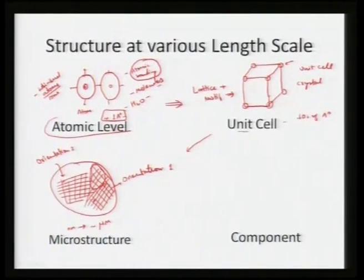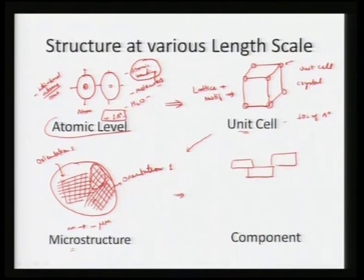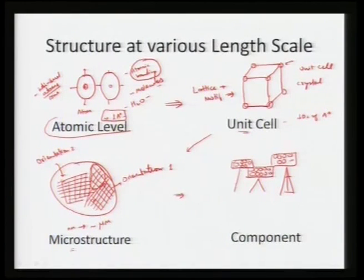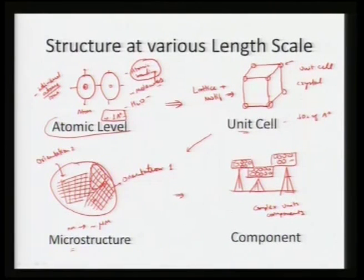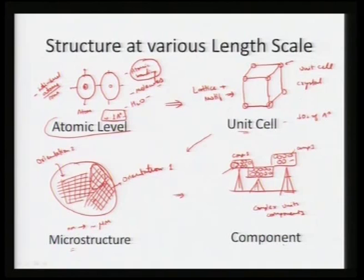So from the atomic level we go to the unit cell level, and from there to the microstructure level. This microstructure can be developed by certain patterns to form a component required for engineering applications. This material will be composed of multiple grains — either micro grains or nano grains — and we can make it into certain useful units. We can develop more complex units or components from this material, combining components into an engineering device or particular structure.